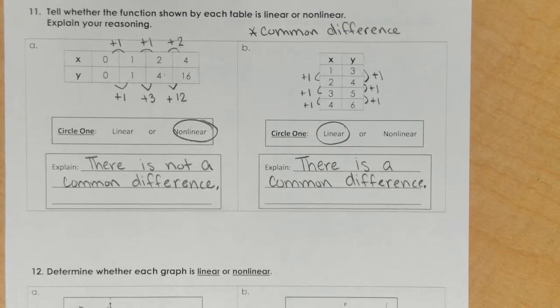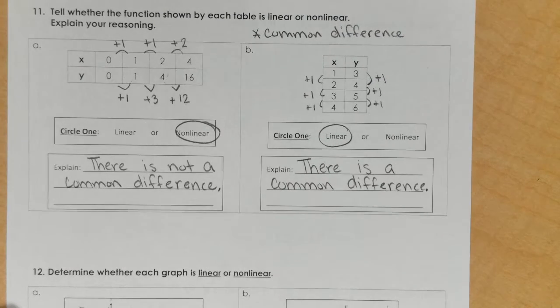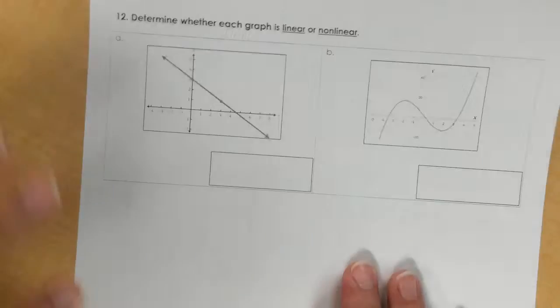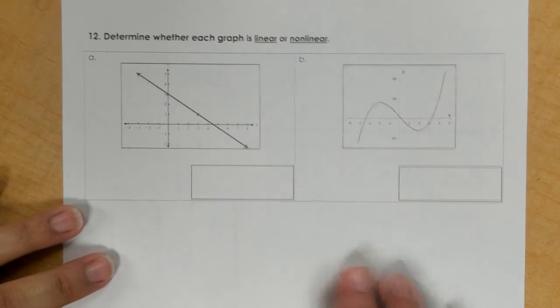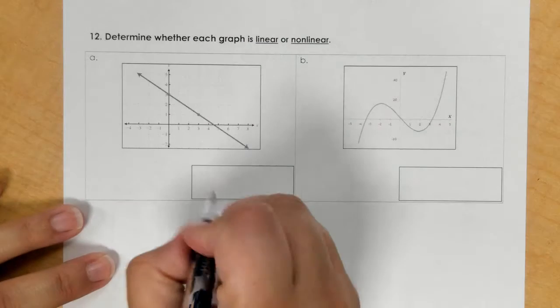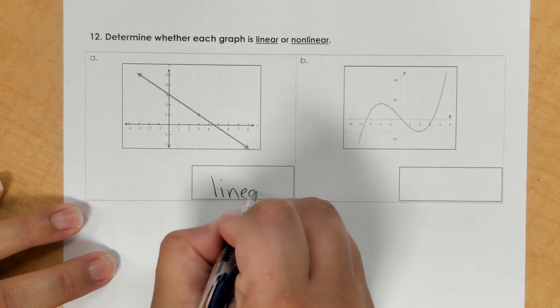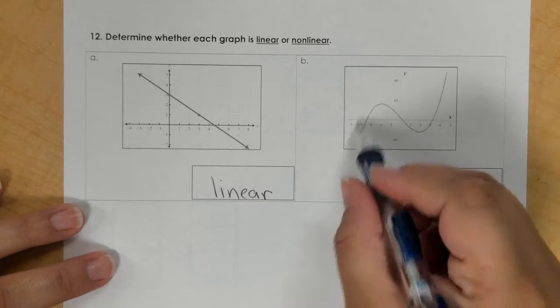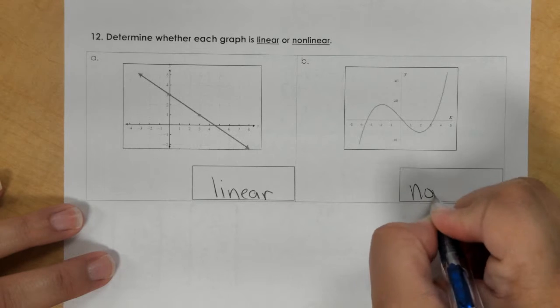Now for number 12, we're asked to look at two graphs and decide which is linear and which is nonlinear. Linear would be your straight line and nonlinear would have curves, so this would be nonlinear.